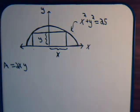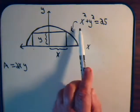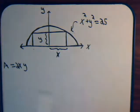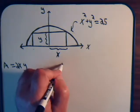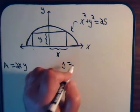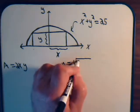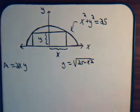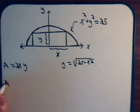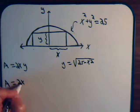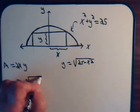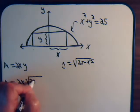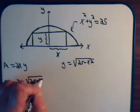As you saw in the previous video, from our constraint equation we can express the area in terms of just one variable. Here we see that y is equal to the square root of 25 minus x squared. So the area equals 2x times the square root of 25 minus x squared.